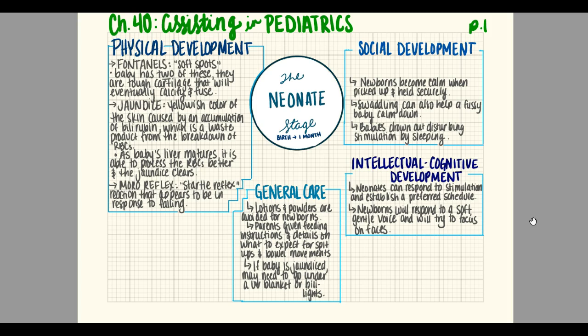Jaundice is another issue that sometimes affects neonates. It is a yellowish color of the skin caused by an accumulation of bilirubin, which is a waste product from the breakdown of red blood cells. As the baby's liver matures, it is able to process the red blood cells better and the jaundice will usually clear. Sometimes we use lights, and we'll talk about that in a little bit.